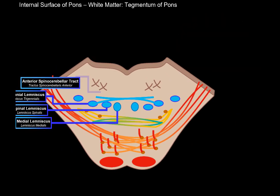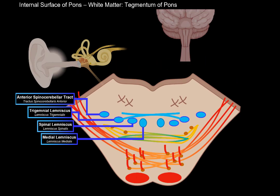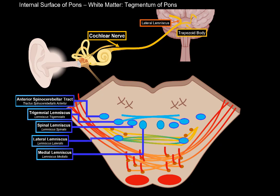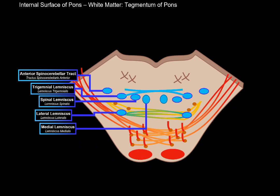The cochlear nerve goes to the pons and then ascends as the lateral lemniscus to the superior temporal gyrus, which is the primary auditory area of the brain. Some fibers cross and then also ascend as the lateral lemniscus. So the lateral lemniscus is an ascending tract we need to include here. That covers all the ascending tracts in the tegmentum of pons — blue represents sensory or ascending tracts, and red represents descending or motor tracts.